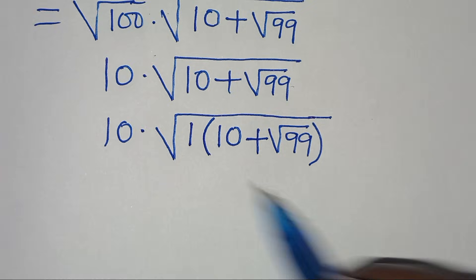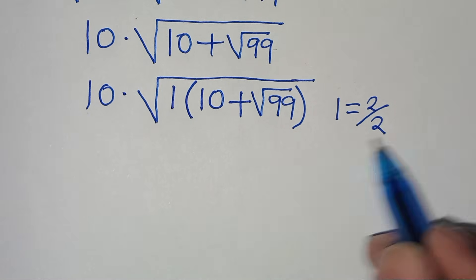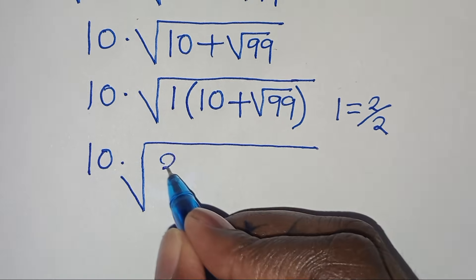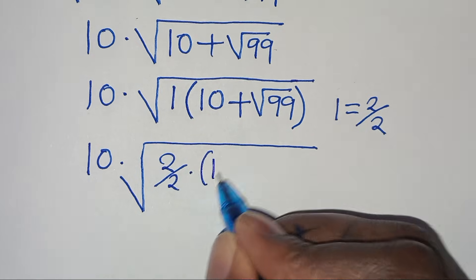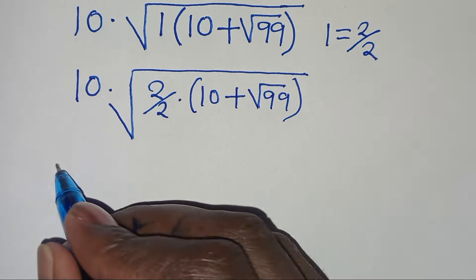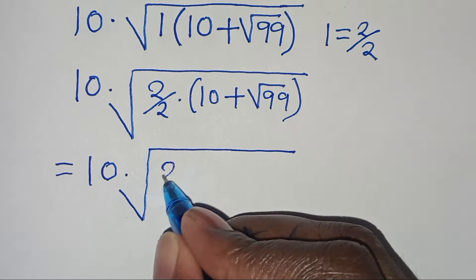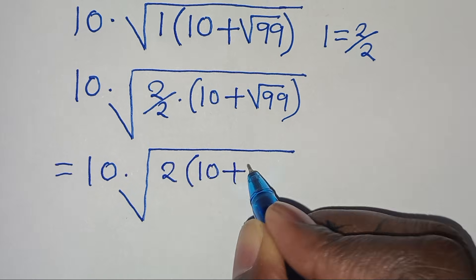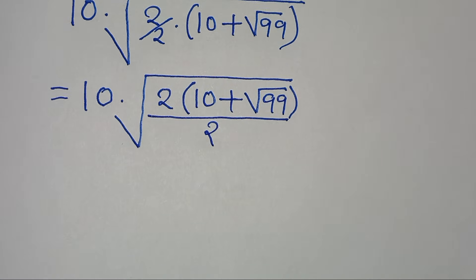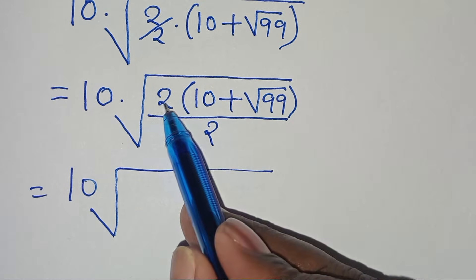We can express this 1 as 2 over 2. Substituting 2 over 2, we now have 10 multiplied by the square root of 2 over 2, multiplied by 10 plus square root of 99. Opening the parentheses in the numerator, we have 2 times 10 plus square root of 99, divided by 2.